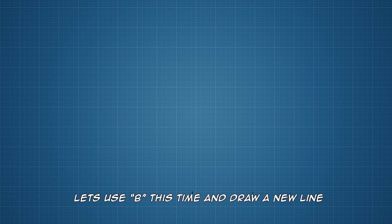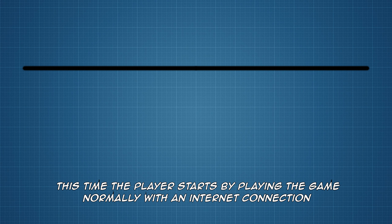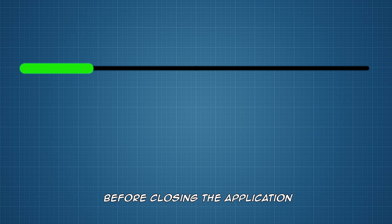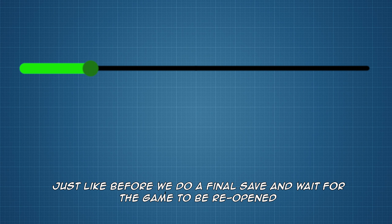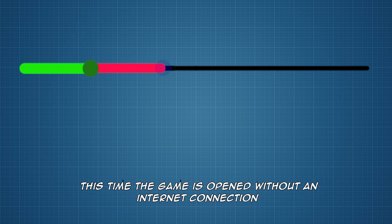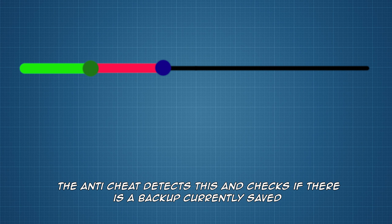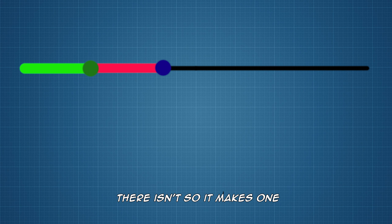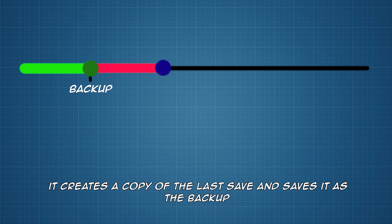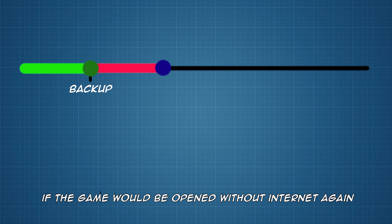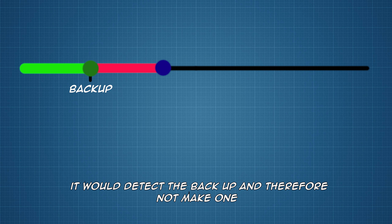Let's use B this time and draw a new line. The player starts by playing the game normally with an internet connection before closing the application. Just like before, we do a final save and wait for the game to be reopened. This time, the game is opened without an internet connection. The anti-cheat detects this and checks if there is a backup currently saved. There isn't, so we're going to make one. It creates a copy of the last save and saves it as the backup. If the game were opened without internet connection again, it would detect the backup and therefore not make a new one.